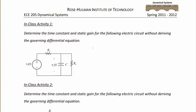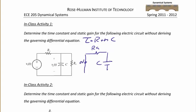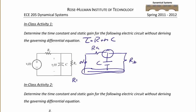Now let's do some examples of finding the time constant and static gain for an electric circuit without deriving the governing differential equation first. Since this is an RC circuit, the first thing we find is tau. Tau equals R_Thevenin times C, so we find the Thevenin equivalent resistance seen by the capacitor. We turn off the voltage source — it becomes a short — and redraw the circuit with R_A and R_B. The capacitor sees R_A and R_B in parallel, so R_Thevenin equals R_A parallel R_B, and tau equals (R_A · R_B)/(R_A + R_B) times C.